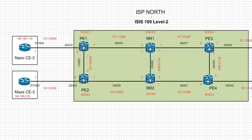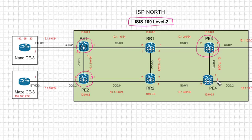Welcome back everyone. Today we're going to continue with our series on IOS XR. In this video we're going to take a look at protocol IS-IS and we're going to configure IS-IS in IOS XR using XRV, as we have been doing throughout this series. We're going to use a topology where we have four PE routers and two RRs.